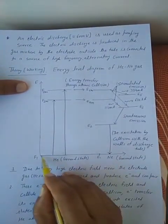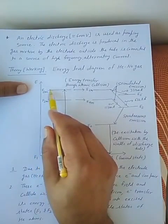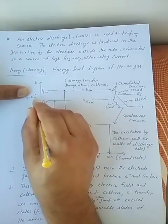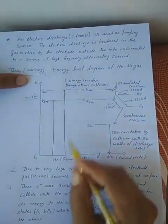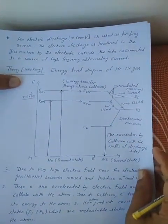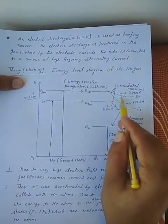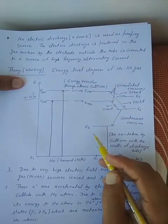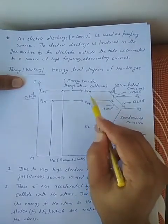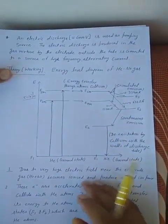F1 is the ground state of Helium; F2 and F3 are excited states of the Helium atom, and both are metastable states — the lifetime of these states is of the order of milliseconds. So Helium atoms stay in these states for a longer time compared to ordinary excited states. For Neon atoms, E1 is the ground state, and E2, E3, E4, E5, E6 are the excited states of Neon. E6 and E4 are both metastable states, so Neon atoms stay there for a longer time compared to ordinary excited states.